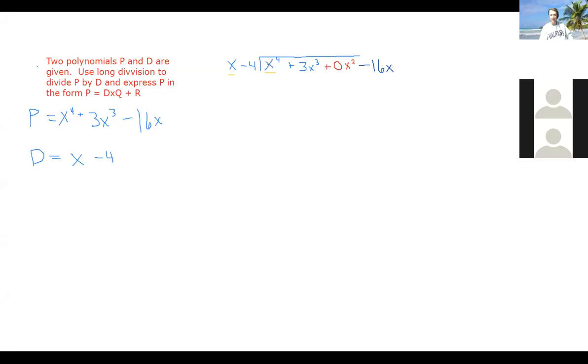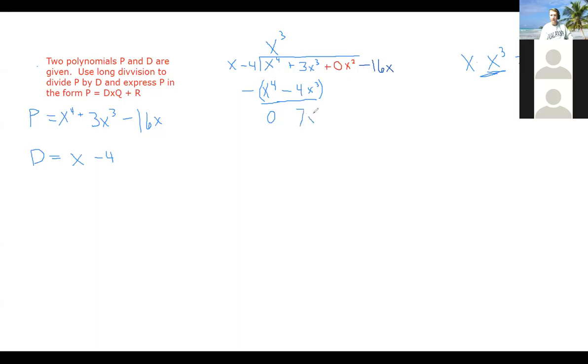So the question here is just what number do we need to multiply this x by to get this x to the fourth? We know that x times x cubed is x to the fourth. So that's what we want. When I multiply x cubed by x, I get this. But multiplying x cubed by this x is not the only thing. We also need to multiply it by this negative 4. So x cubed times minus 4 is minus 4x cubed.